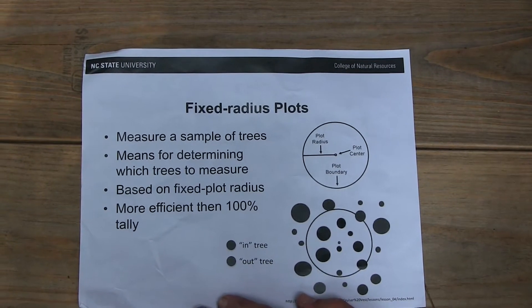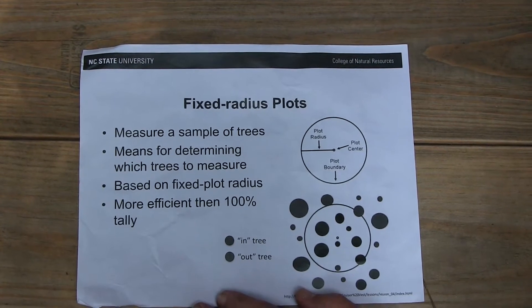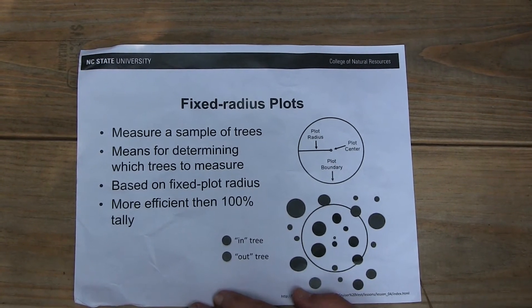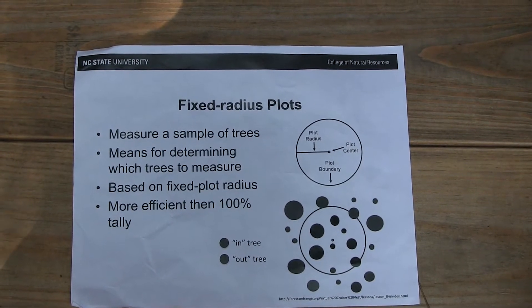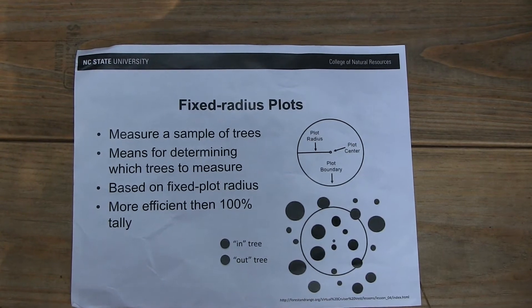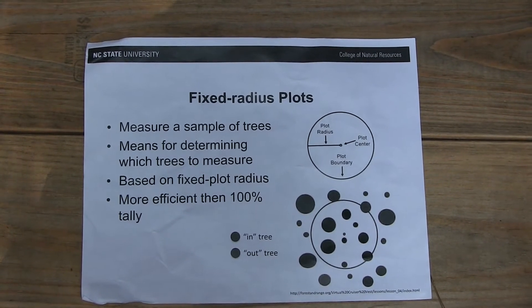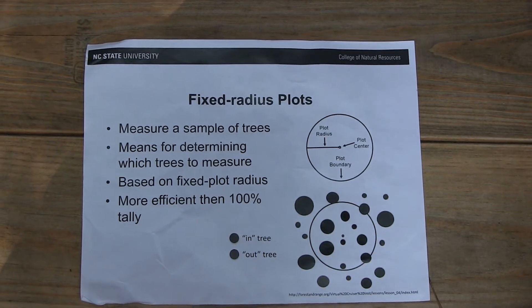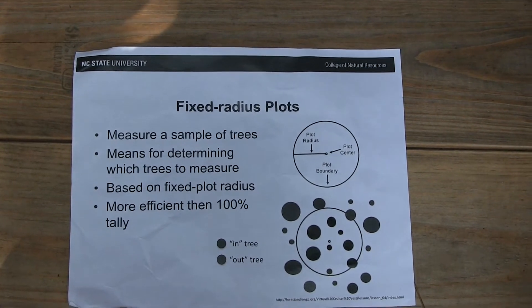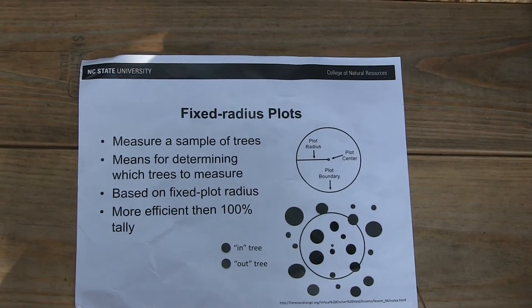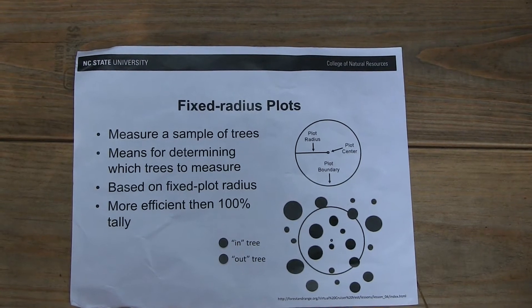Two of the most basic ways of doing timber inventory with sampling are to use what are called fixed radius plots or variable radius plots. This diagram here shows a fixed radius plot. A plot can be of different sizes, and you want to use the same size throughout the stand when doing an inventory. Common conventions for fixed radius plots are tenth-acre plots or fifth-acre plots, with tenth-acre plots being very common. There are 43,560 square feet in an acre, so a tenth of that is 4,356 square feet in a tenth-acre plot.